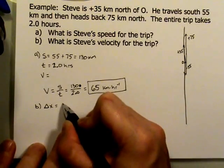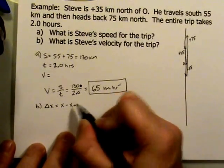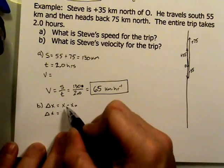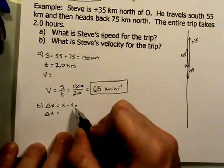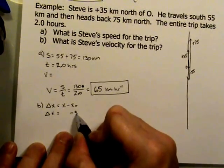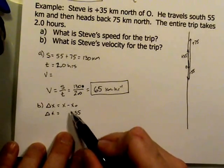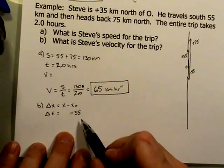So you know that this is going to be x minus x naught. So the final displacement and the initial displacement. Well, the initial displacement, I know that's really easy. That was plus 35. And so the minus sign comes from the formula. I'm going to subtract positive 35.